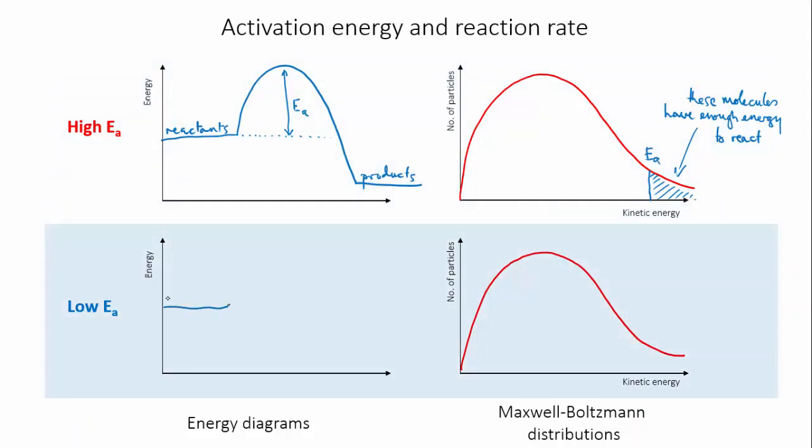But now, consider mixing in the second flask this same reactant with something that will cause a different chemical reaction, one that has a low activation energy. The energy diagram for this reaction looks like this, and the activation energy would be somewhere here on the Maxwell-Boltzmann diagram.